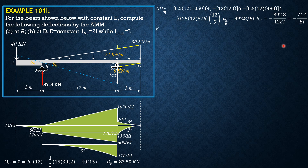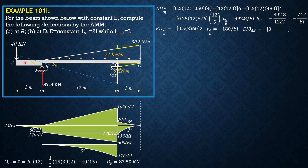Let's compute the deviation of A relative to the tangent at B, which is the moment of area between A and B with respect to A. That gives negative one-half times 3 times 60 times two-thirds of 3 (moment arm = 2), equal to negative 180 over EI. The angle between tangents at A and B, EI·θ_AB, is just the area — negative one-half times 3 times 60 — equal to negative 90 over EI. Now let's enlarge the portion A-B-C-D to analyze θ_A and deflection at A.